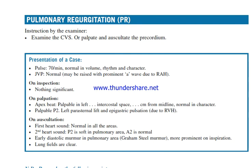Pulmonary regurgitation. Instruction by the examiner: examine the CVS or palpate and auscultate the precordium. Presentation of a case: pulse 70 beats per minute, normal in volume, rhythm and character. JVP normal, may be raised with prominent A wave due to right atrial hypertrophy. On inspection, nothing significant. Apex beat palpable in the left intercostal space, centimeters from midline, normal in character.